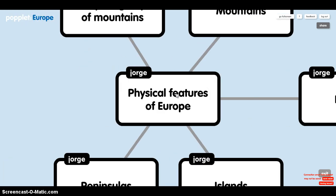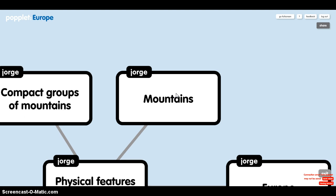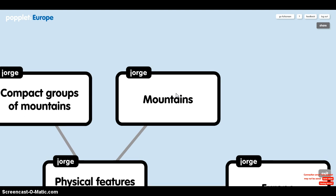Physical features of Europe. The great European plain extends from the Pyrenees to the Ural Mountains in Russia. Most of the mountain chains such as the Alps and the Balkans are in the south of Europe near the Mediterranean Sea.